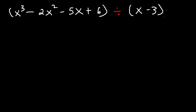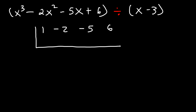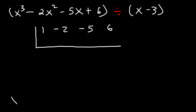How can we do this? Well, first, let's draw this. On the inside, you want to put the coefficients of this function. So it's 1x cubed minus 2x squared minus 5x plus 6. Now you need to put a number out front. If you take the factor x minus 3 and set it equal to 0 and solve for x, you'll see that x is equal to 3.